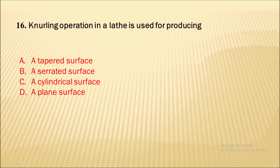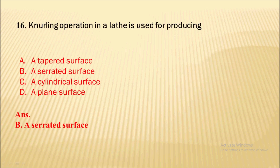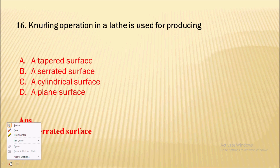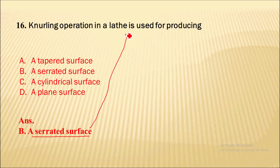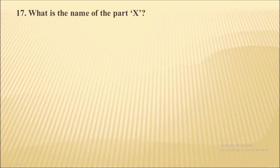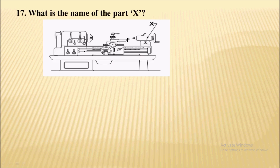Next question: the knurling operation in a lathe is used for producing — it is used for producing a serrated surface. To provide a better grip, we use the knurling operation, which produces a serrated surface.